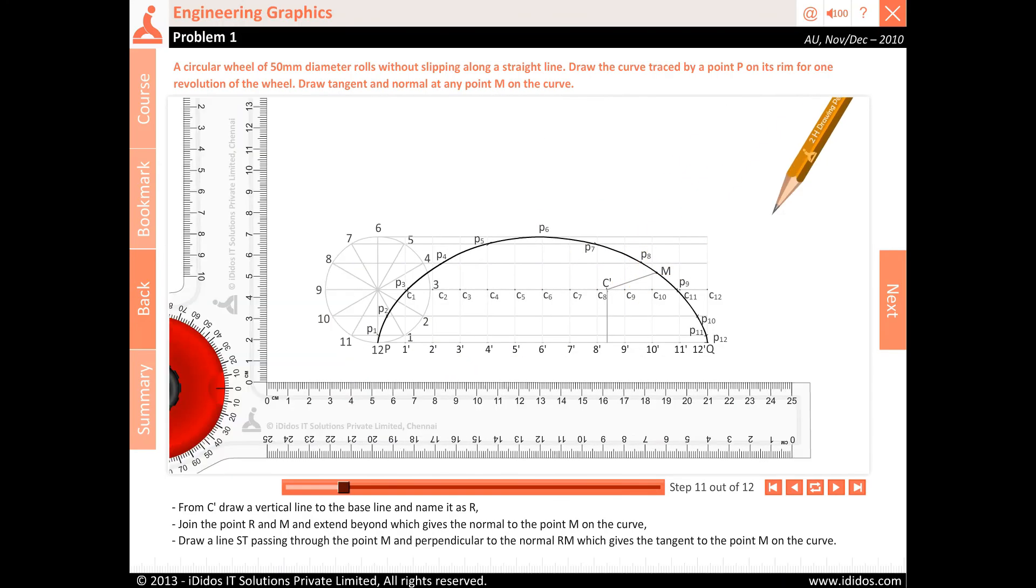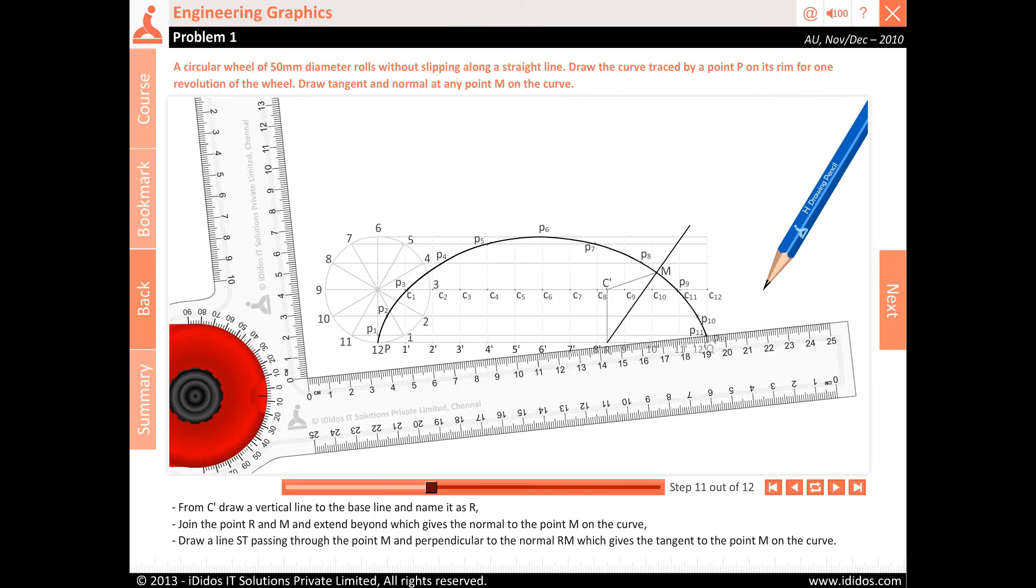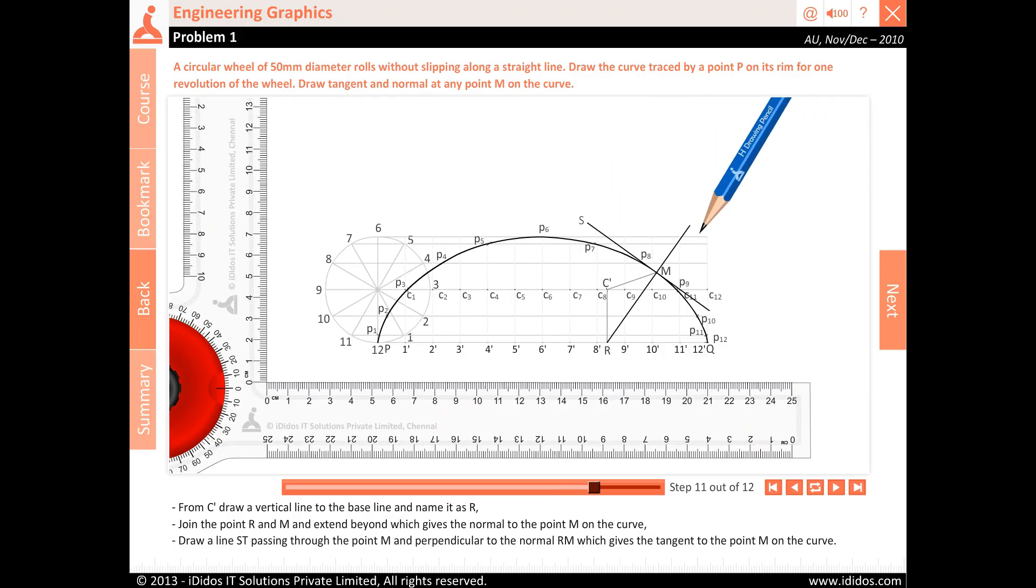From C′, draw a vertical line to the baseline and name it as R. Join the point R and M and extend beyond, which gives the normal to the point M on the curve.